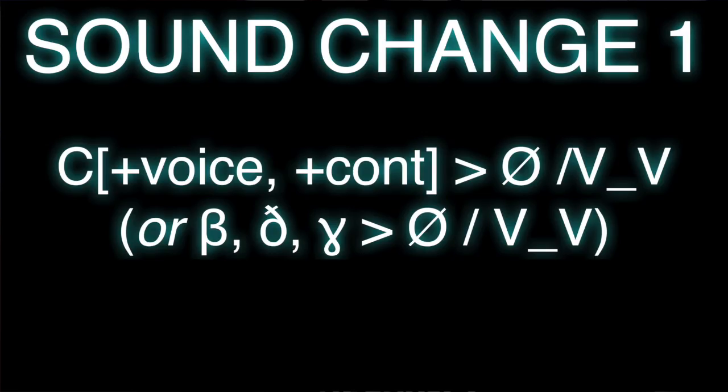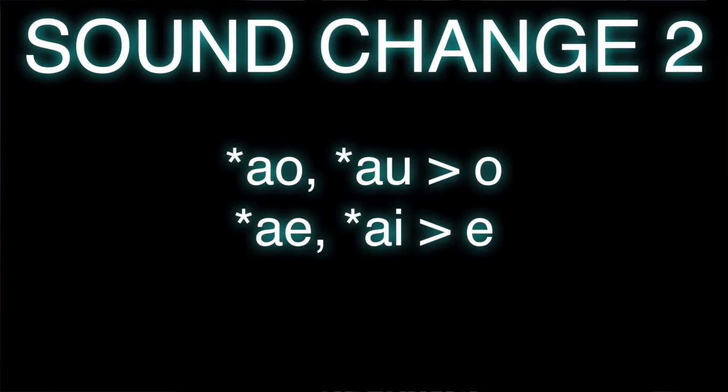The first thing that you have to do is throw in some sound changes. One of the things that I did was I got rid of all weak fricatives in between vowels — the voiced bilabial fricative, the voiced interdental fricative, and the voiced velar fricative — all disappeared in between vowels. That left a lot of places where two vowels were occurring right next to each other, and with those I employed some vowel coalescence.